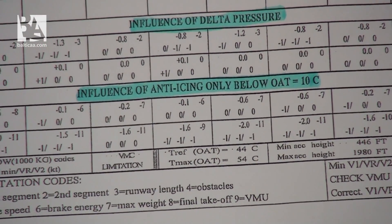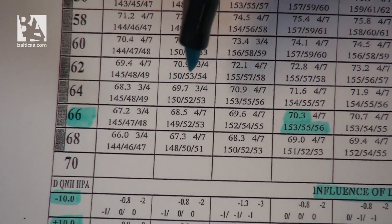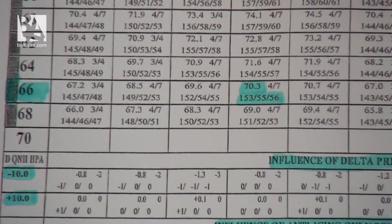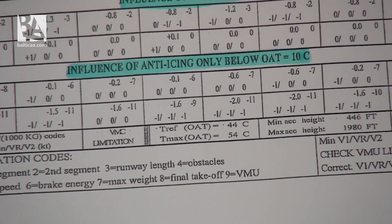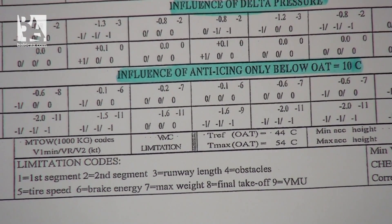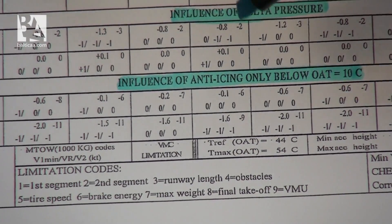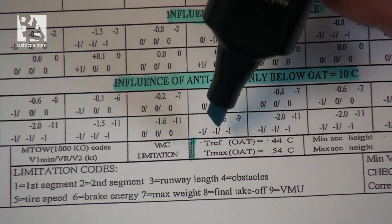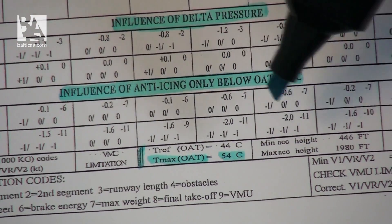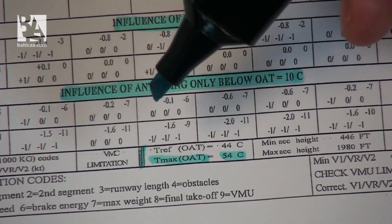You can see that our weight with the speeds falls in the 66 degrees column, but it has a gray area. This means we could use a flex temperature — or assumed temperature — of 66 degrees centigrade, where the engines would behave as if they were at 66 degrees. However, the gray area means we have to go down and read that the maximum temperature we could use is 54 degrees centigrade. So no matter that we were in the 66-degree zone, we can only use 54 degrees maximum.